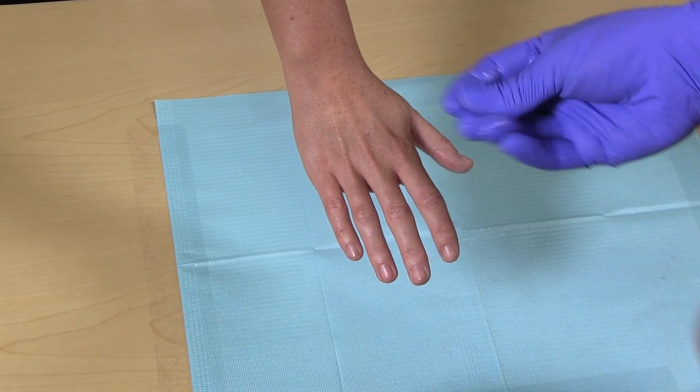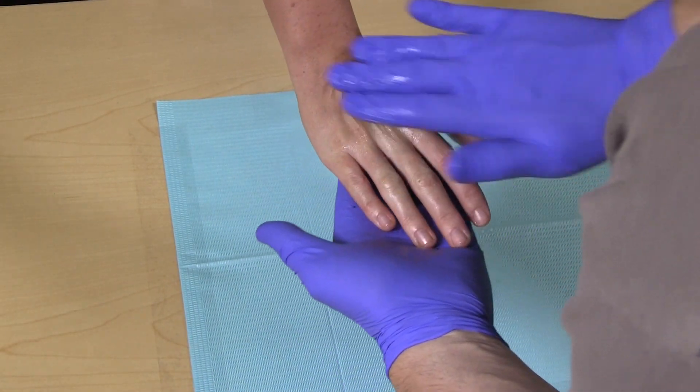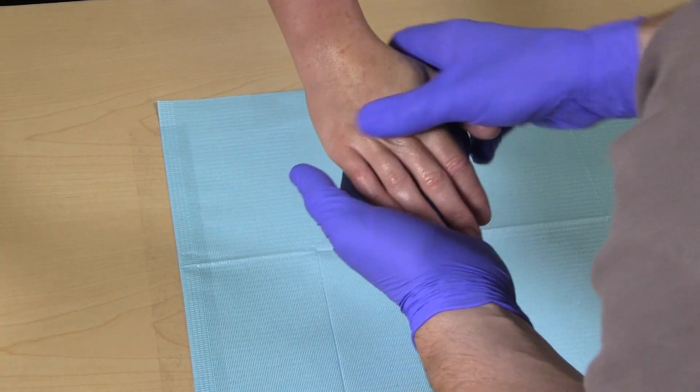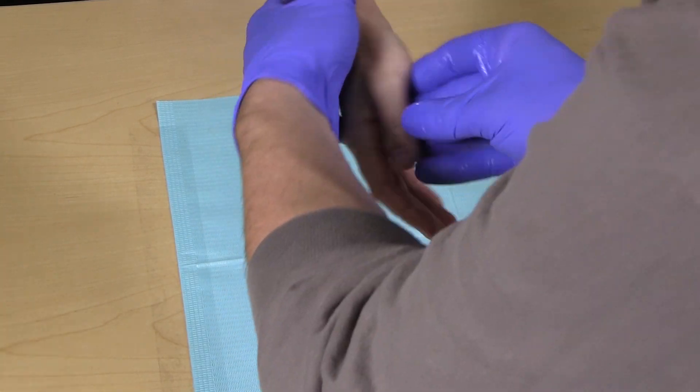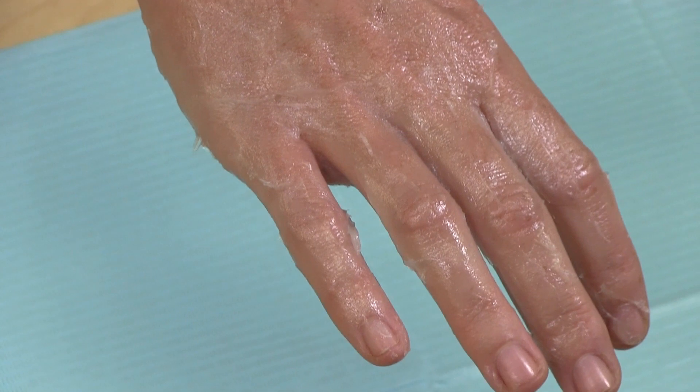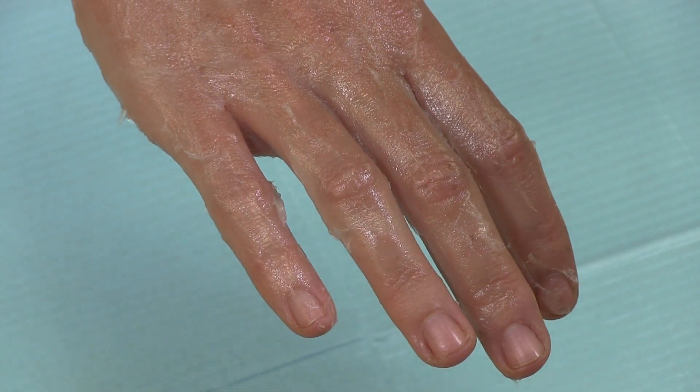Apply a thin layer of Vaseline to the customer. This thin layer is important as the Vaseline acts as a mold release after the impression material is cured. Do not leave clumps of Vaseline or a thick layer as this will destroy details in the mold.